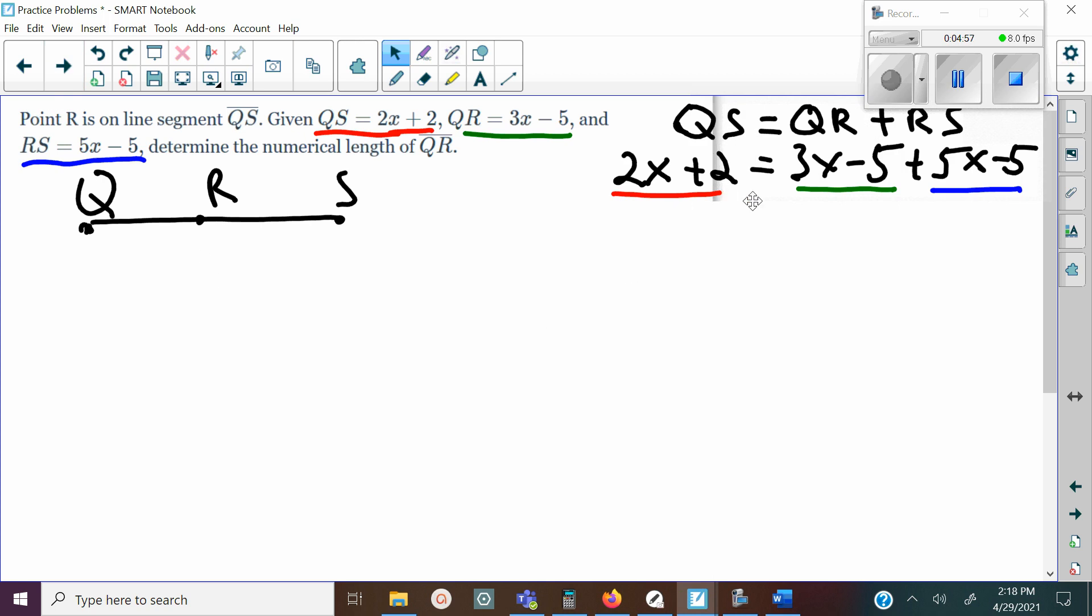I got 2x + 2, 3x - 5, 5x - 5 to correspond with the actual name for each segment. Then I'm going to collect my like terms. That's going to leave me with 8x - 10 over here on the right.